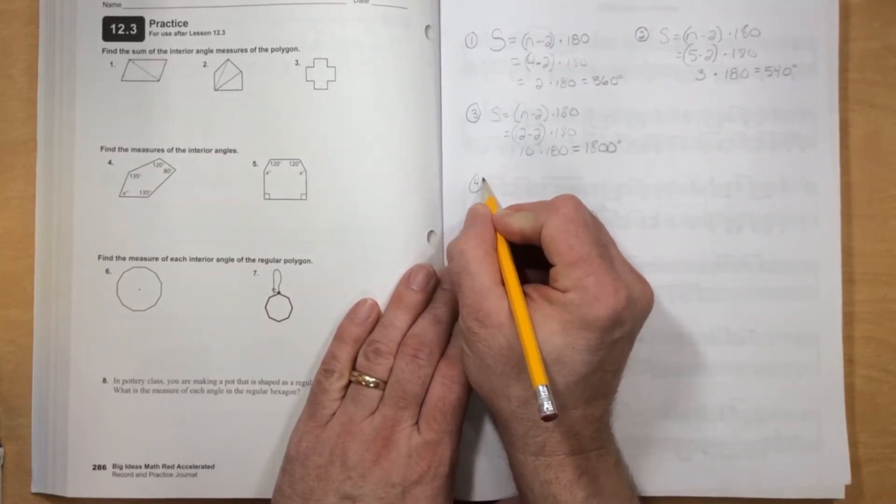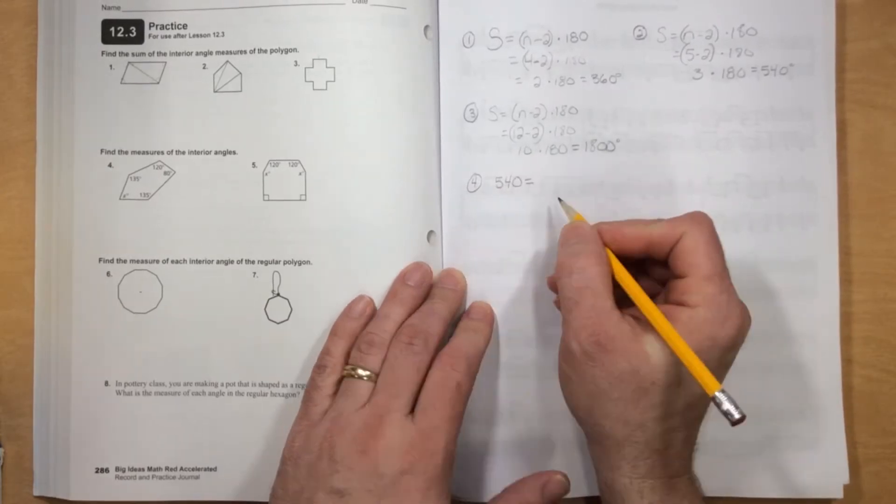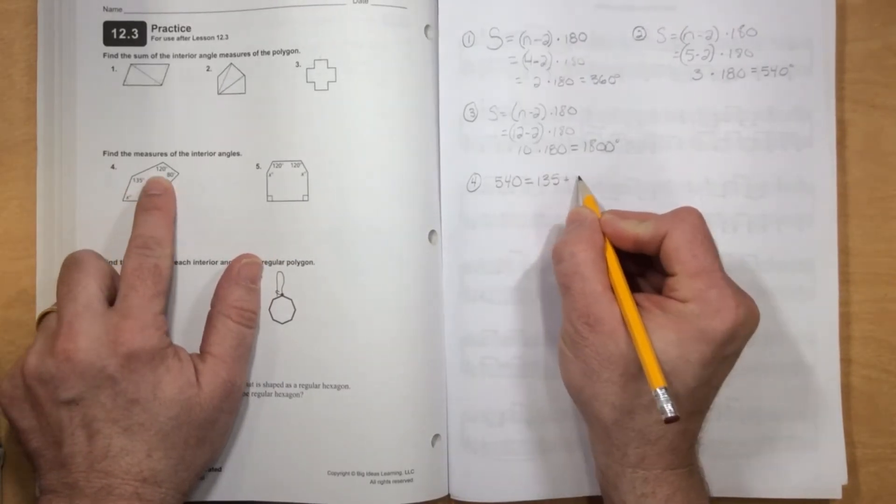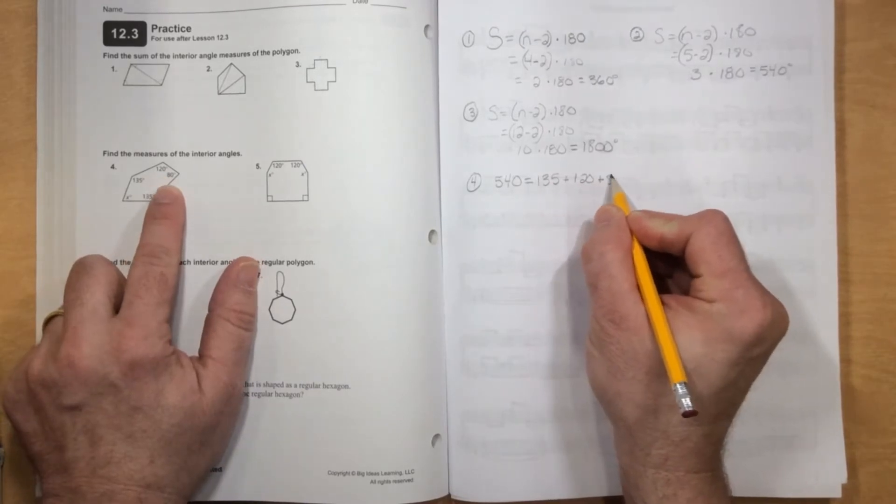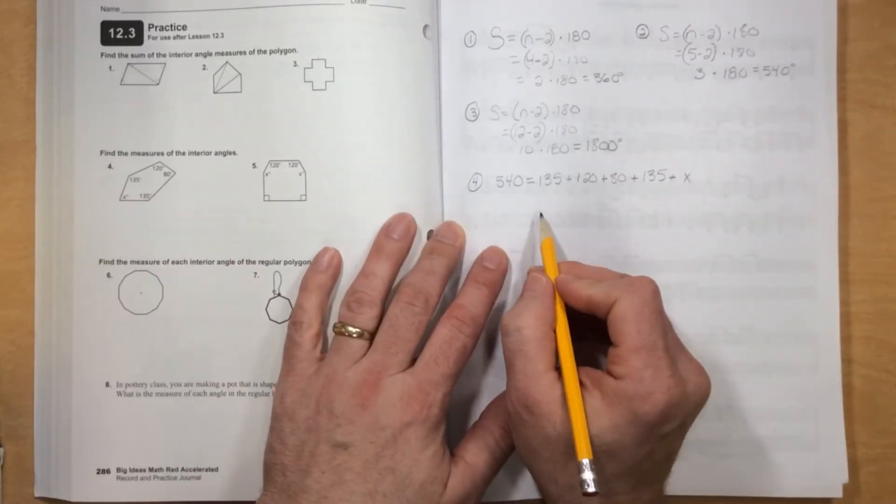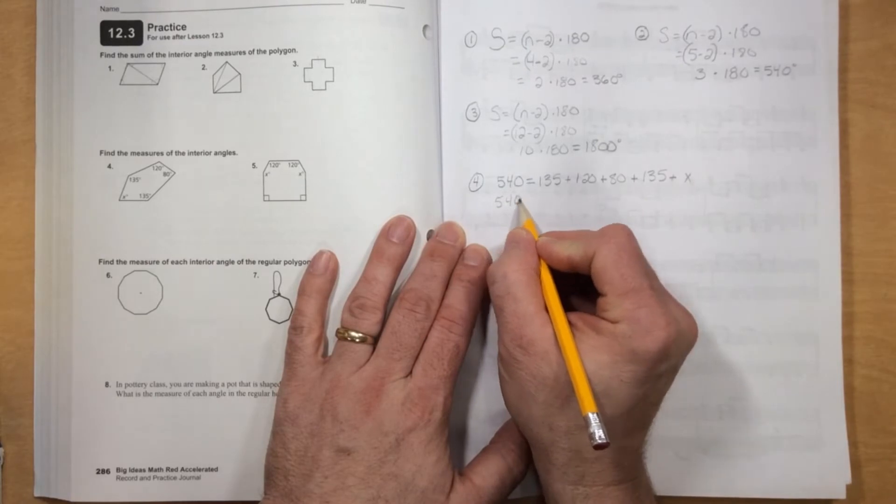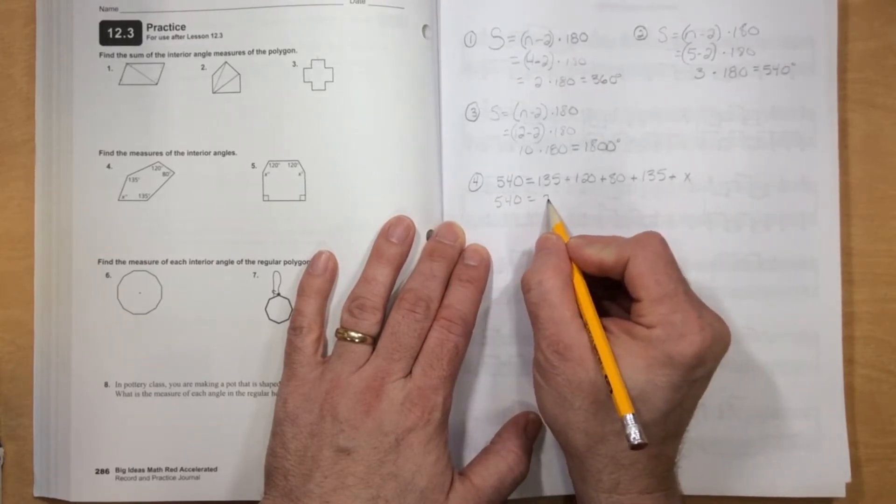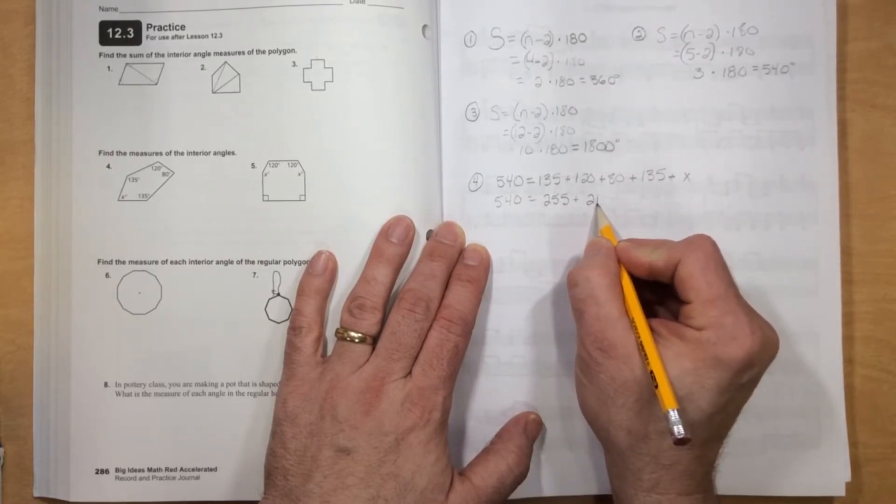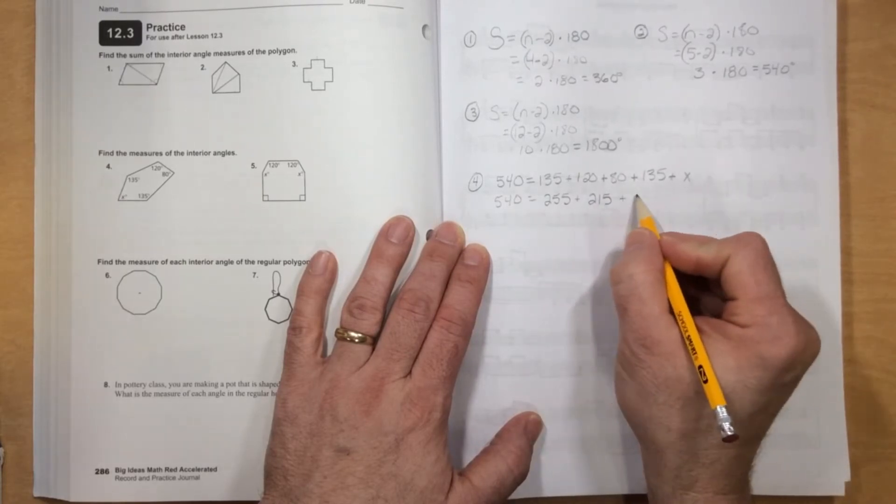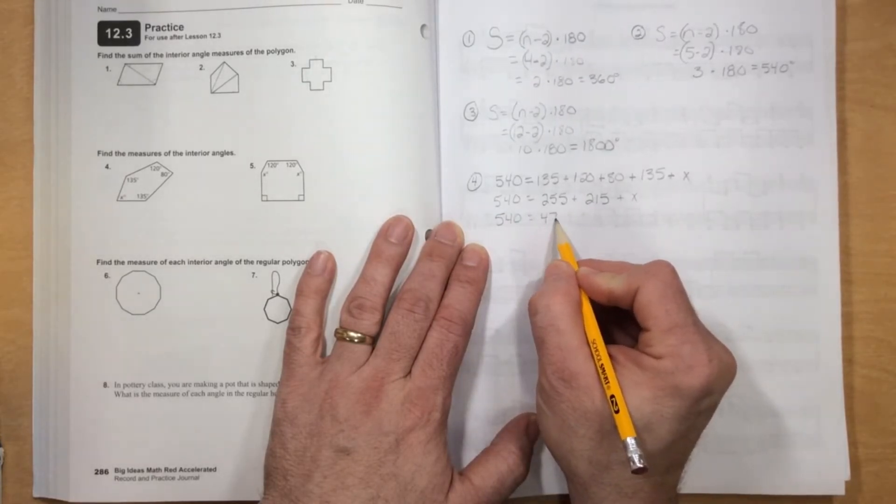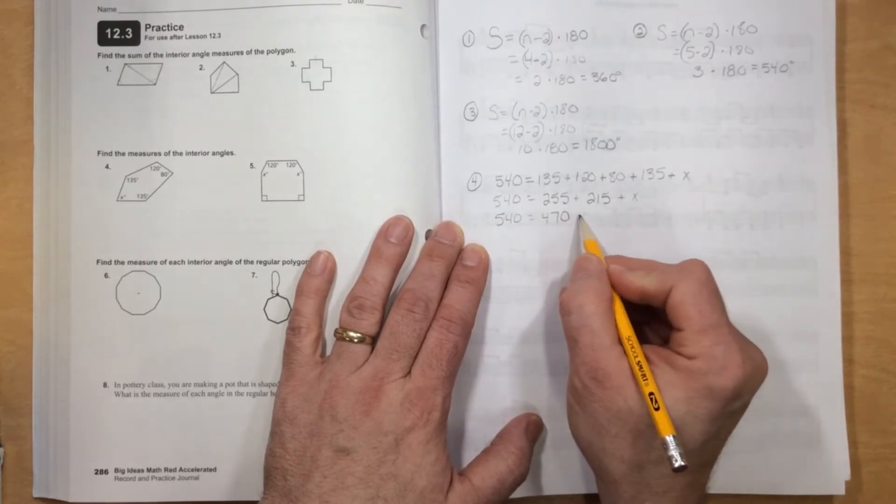So I can just skip to knowing that 540 degrees is what these are going to add up to. So I'll start here: 135 plus 120 plus 80 plus 135 plus X equals 540. And now we just add these up. I know 135 and 120 is 255, and 80 and 135 will be 215 plus X still. And now I'll add those two to get 470 plus X.